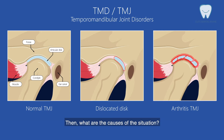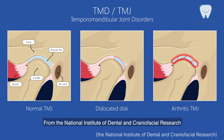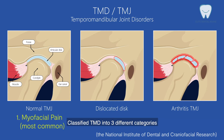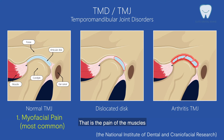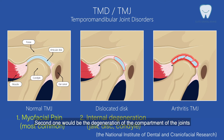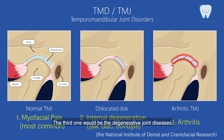Now, what are the causes of this situation? The National Institute of Dental and Craniofacial Research classifies TMD into three different categories. The first is myofascial pain — that is pain of the muscles. The second is internal degeneration of the compartment of the joints, which could include a dislocated jaw, displaced disc, or injury of the condyle. The third is degenerative joint disease, most likely rheumatoid arthritis or osteoarthritis.